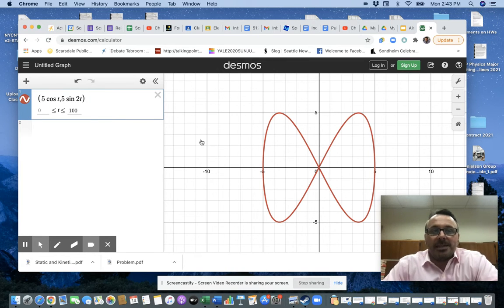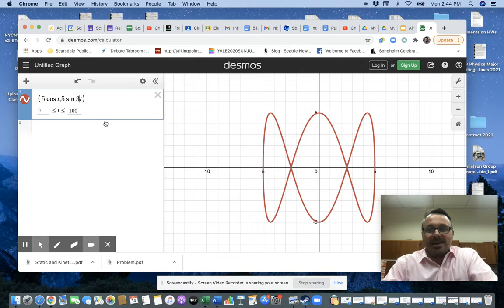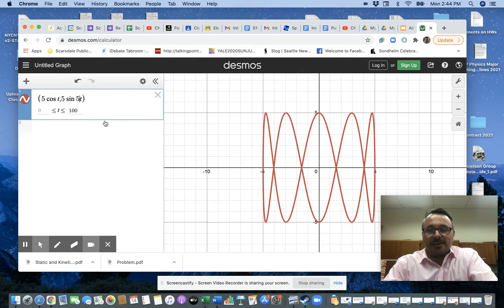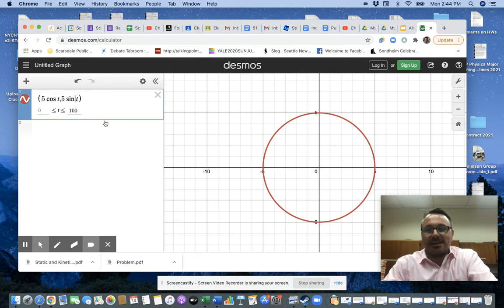And I get this delightful shape. Because notice what this says. This says that the x position is oscillating back and forth between 5 and negative 5. But the y position is oscillating between 5 and negative 5. But it does so twice as fast. So in the time it takes the x to go through 1 cycle, the y has gone through 2 cycles. Or 3 cycles, 4 cycles, 5 cycles, 6 cycles, 7 cycles.